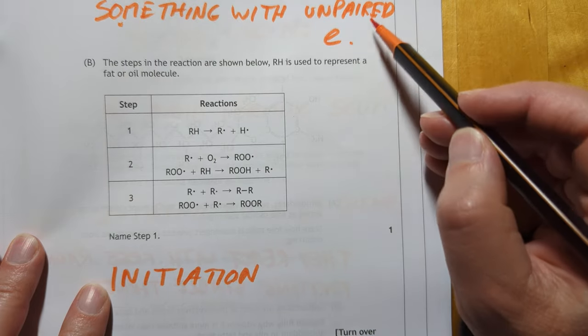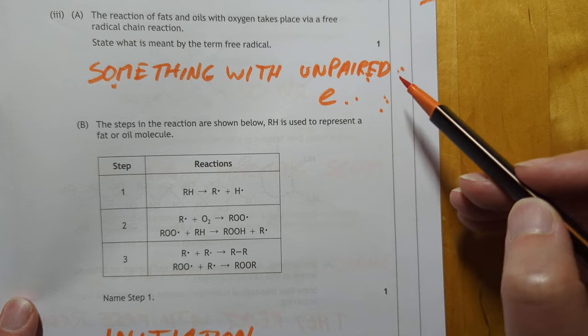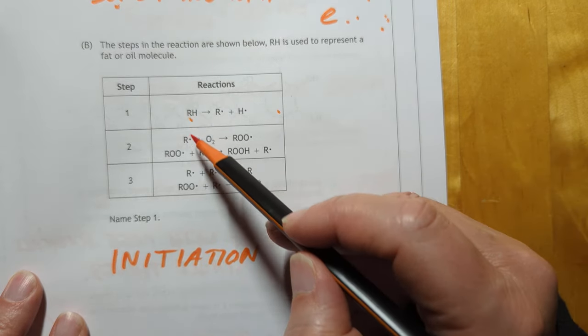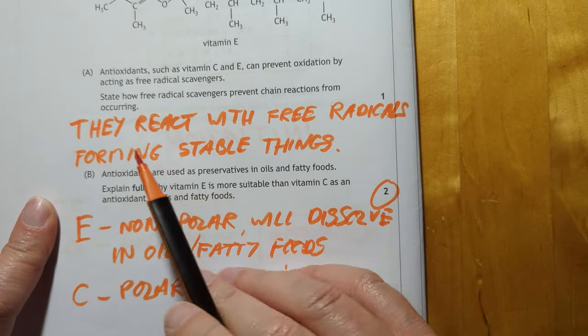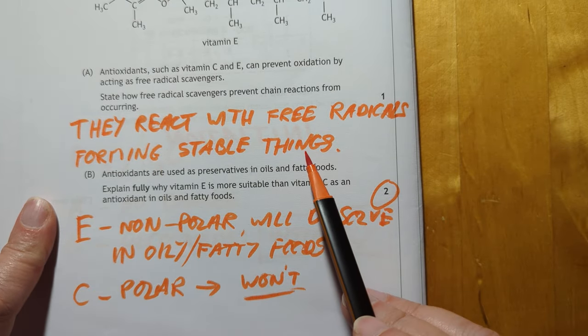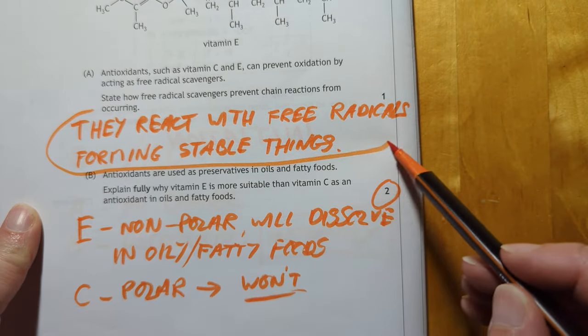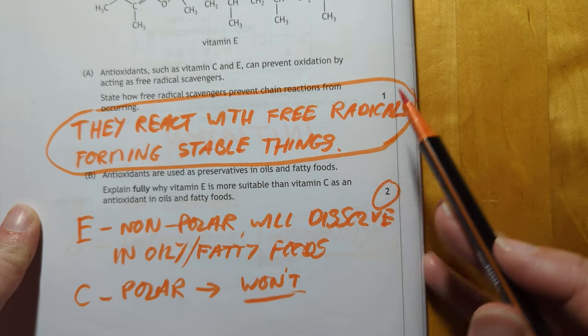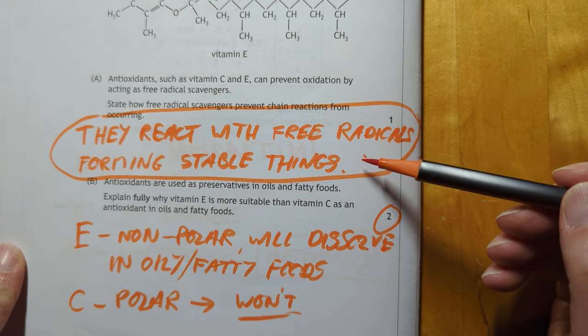It's an atom or molecule with an unpaired electron. Who was I chatting to just before the exam about this? Can't remember. Somebody asked me just before the morning of the exam. This is an initiation step, because you start with a molecule, and end up with two radicals. Free radical scavengers react with free radicals, forming stable molecules. I don't like this trend in chemistry, where they're asking you to vomit up a definition straight from the course specification. I'm not keen on that. I know biology tends to do this. Please don't end up like that, SQA, in chemistry.